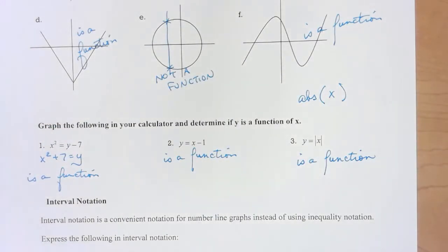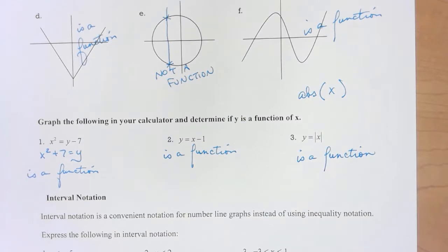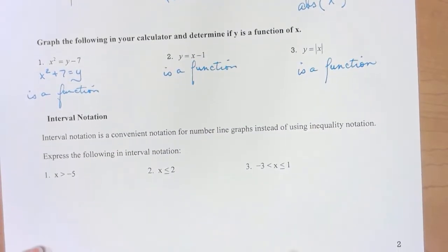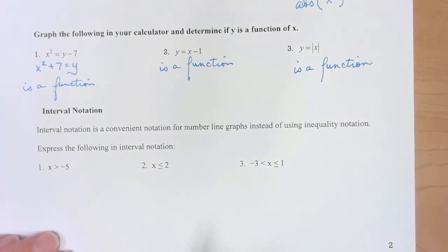Interval notation is a convenient notation for number line graphs instead of using inequality notation. Express the following in interval notation. It is to your advantage if you will graph these. So in this one I locate negative five.